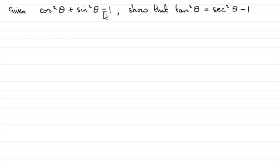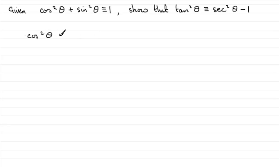So I'm going to change that and just put a line over the top. And we've got to show that tan²θ is then identical to sec²θ minus 1. So if we take this identity, let's start with cos²θ + sin²θ is identical to 1.